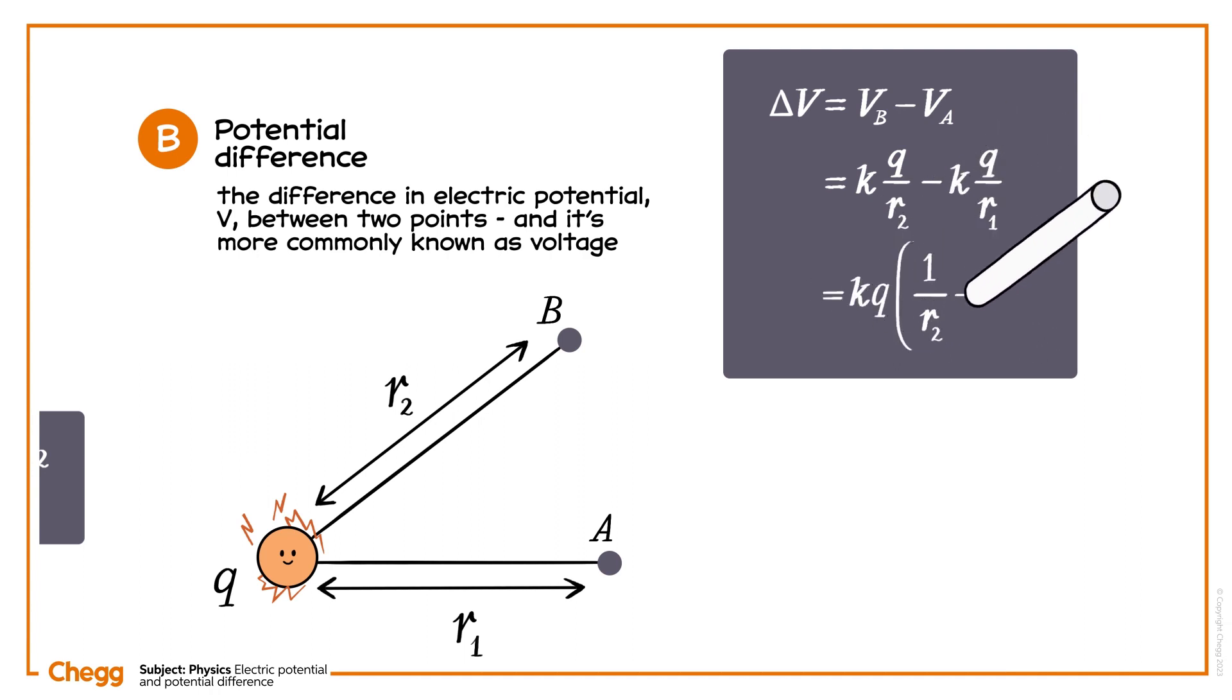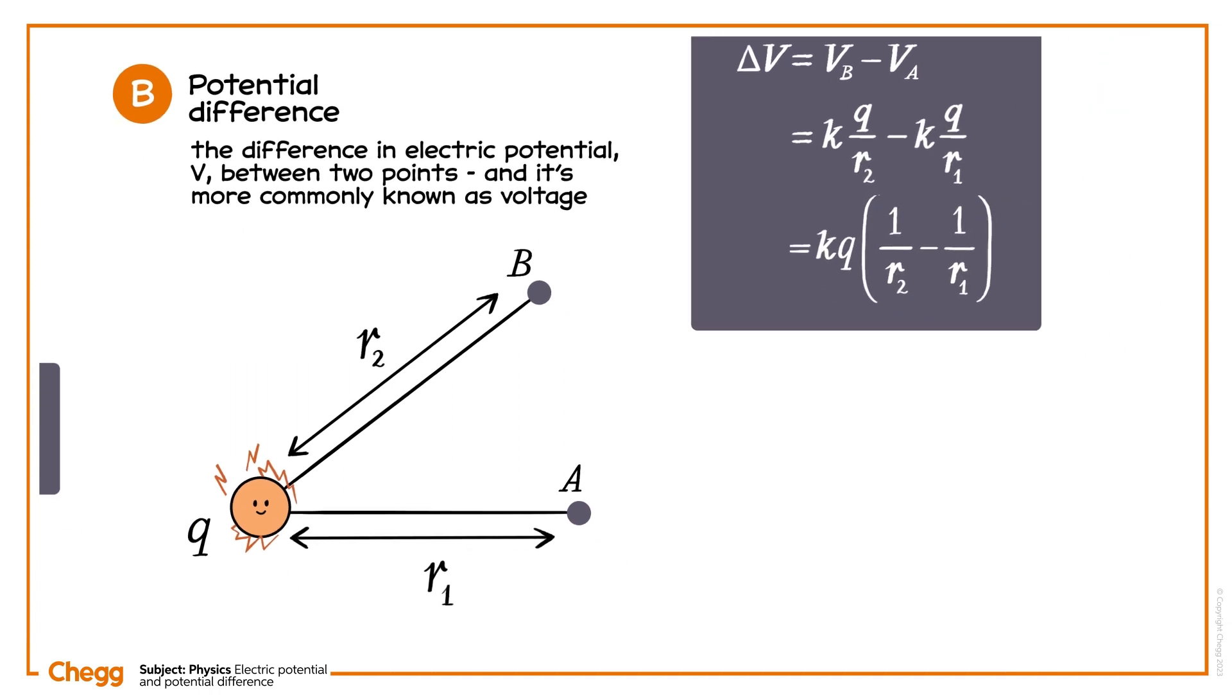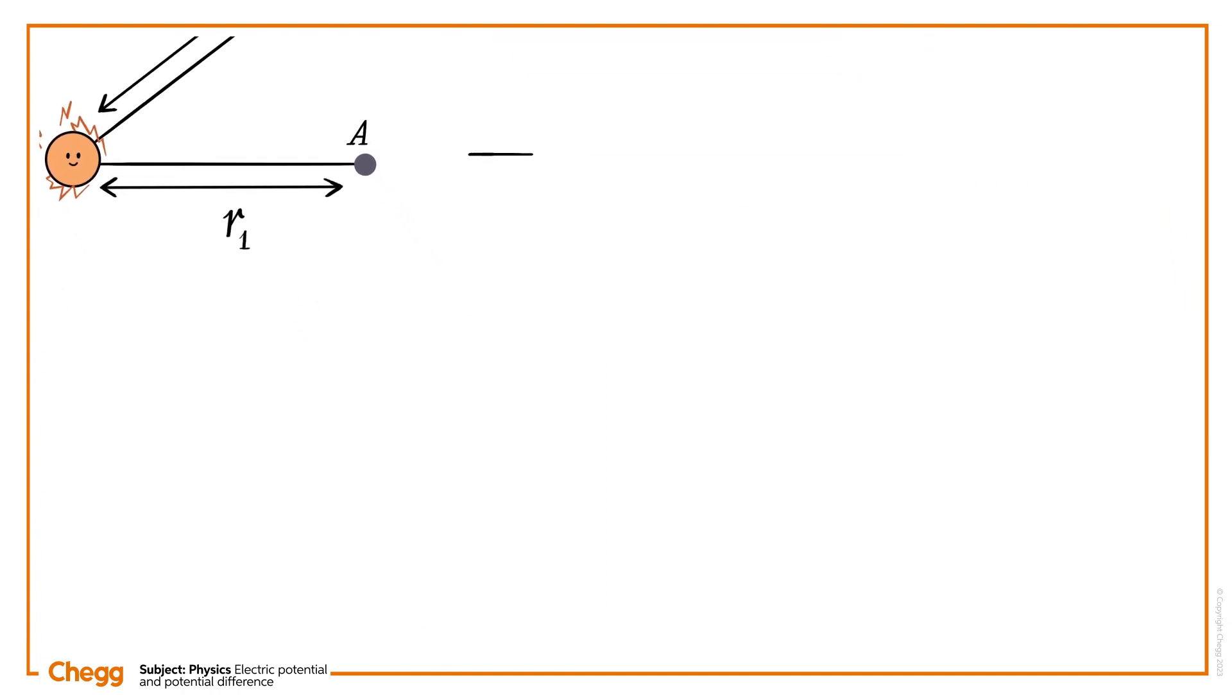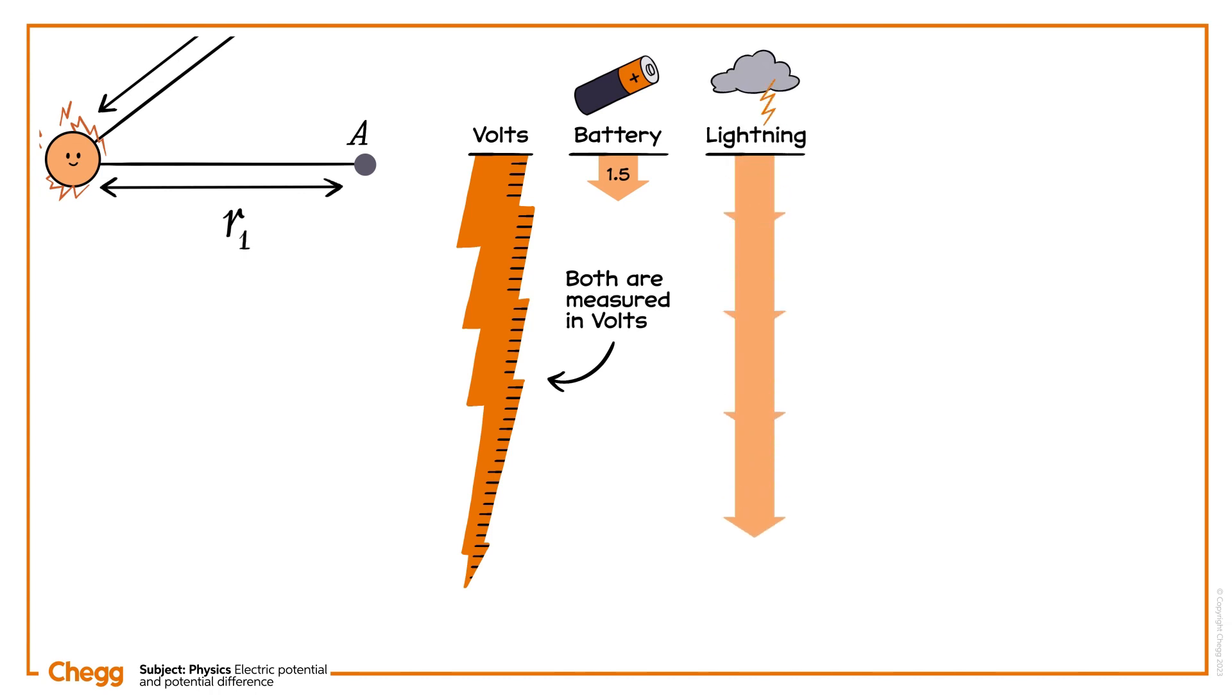Rewriting the equation, we get this. Both electric potential and potential difference are scalar quantities measured in volts. A household battery's potential difference may typically be around 1.5 volts, while for lightning, this can be as high as 150 million volts.